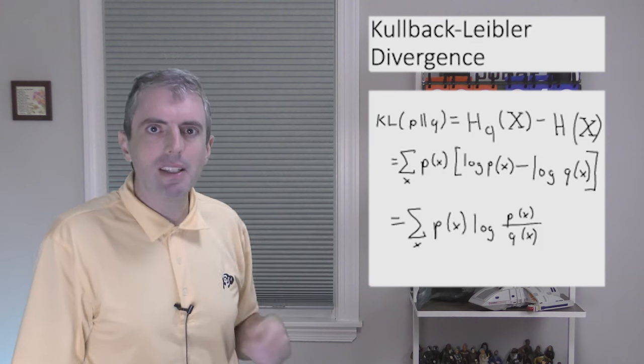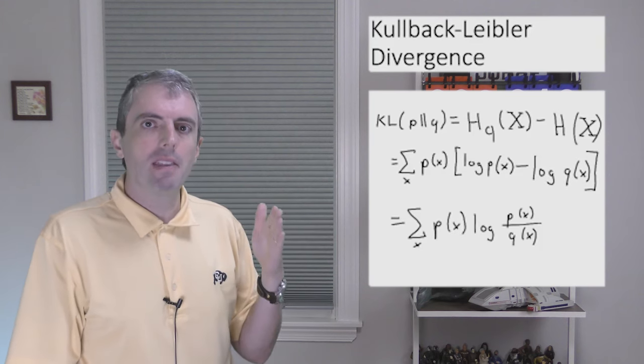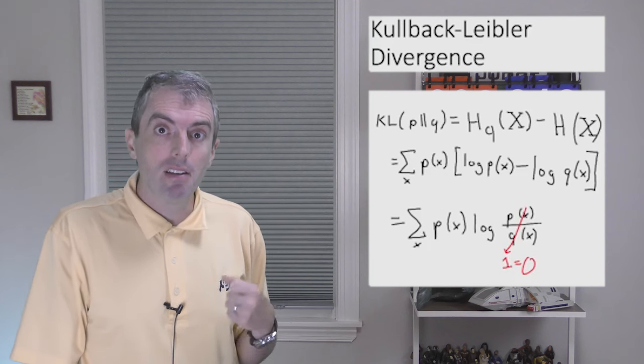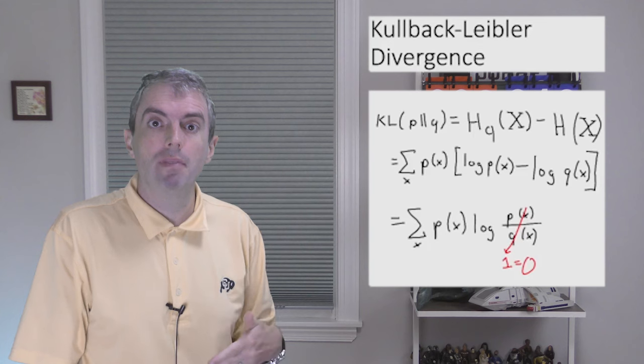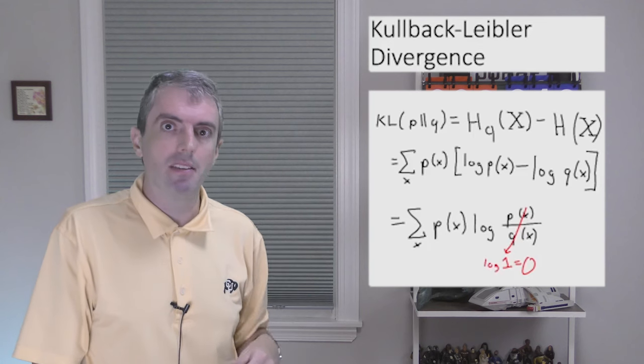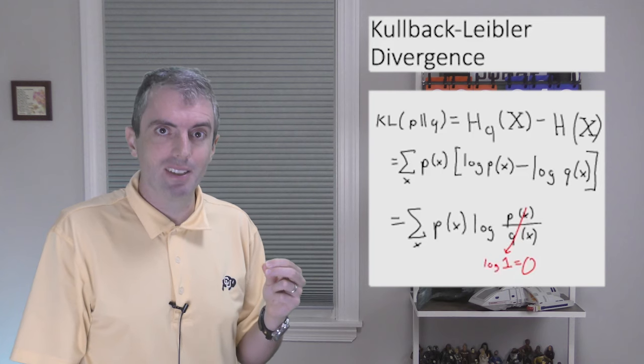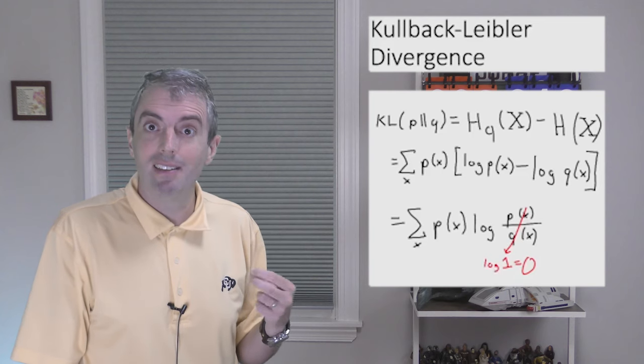When you write it this way, you can see the nice property that when the distributions are actually the same, the log becomes log of 1, and log of 1, regardless of the base, is always 0. So then the KL divergence between two identical distributions is also 0.